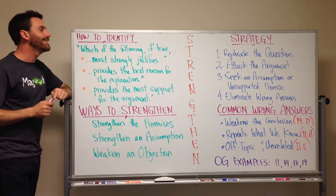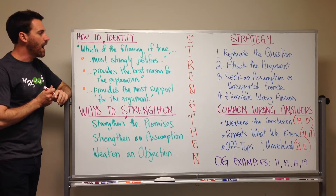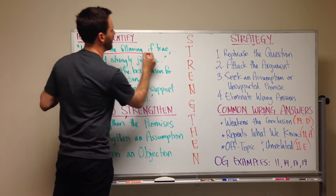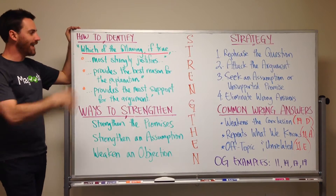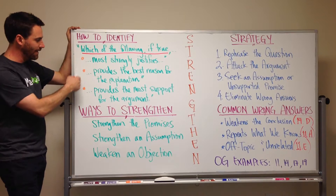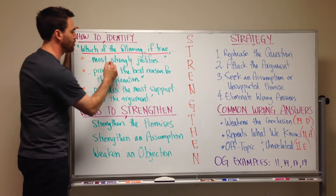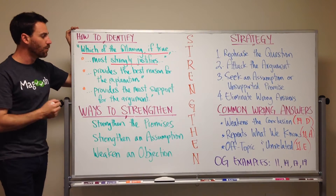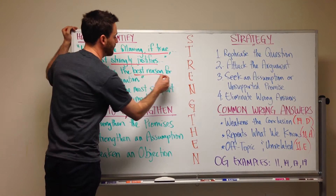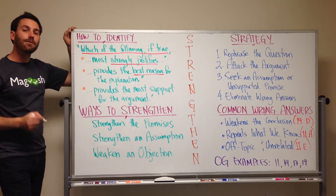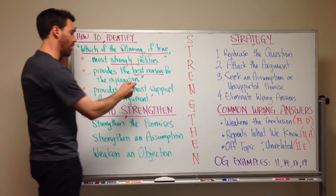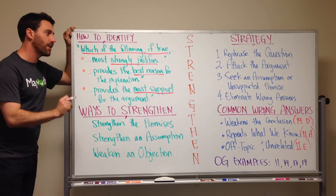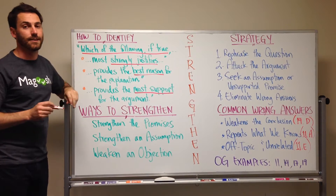It's very important to know how to identify these question types. They're usually going to start with something like 'Which of the following, if true,' and then you'll get something that sounds like: 'most strongly justifies,' 'provides the best reason for the explanation,' or 'provides the most support for the argument.' You can see there are strong clues that tip you off to the fact that you're dealing with a strengthening question.